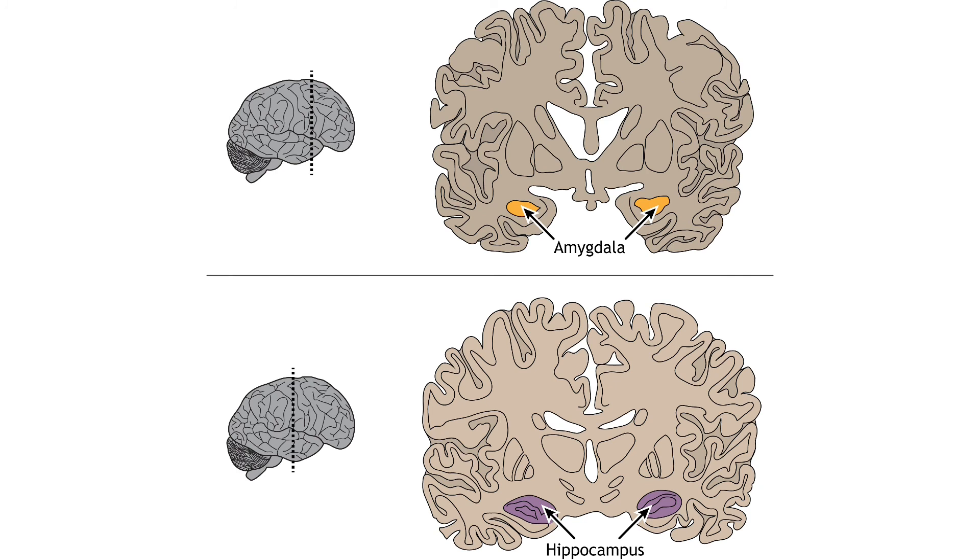The inferior temporal lobe also makes reciprocal connections with the structures in the limbic system. The limbic system plays an important role in processing emotions and memory, both of which are significant components to visual perception. The amygdala ties visual stimuli with emotions and provides value to objects. A family member will have emotional ties that a stranger will not. The hippocampus is responsible for learning and memory and helps establish memories of visual stimuli.